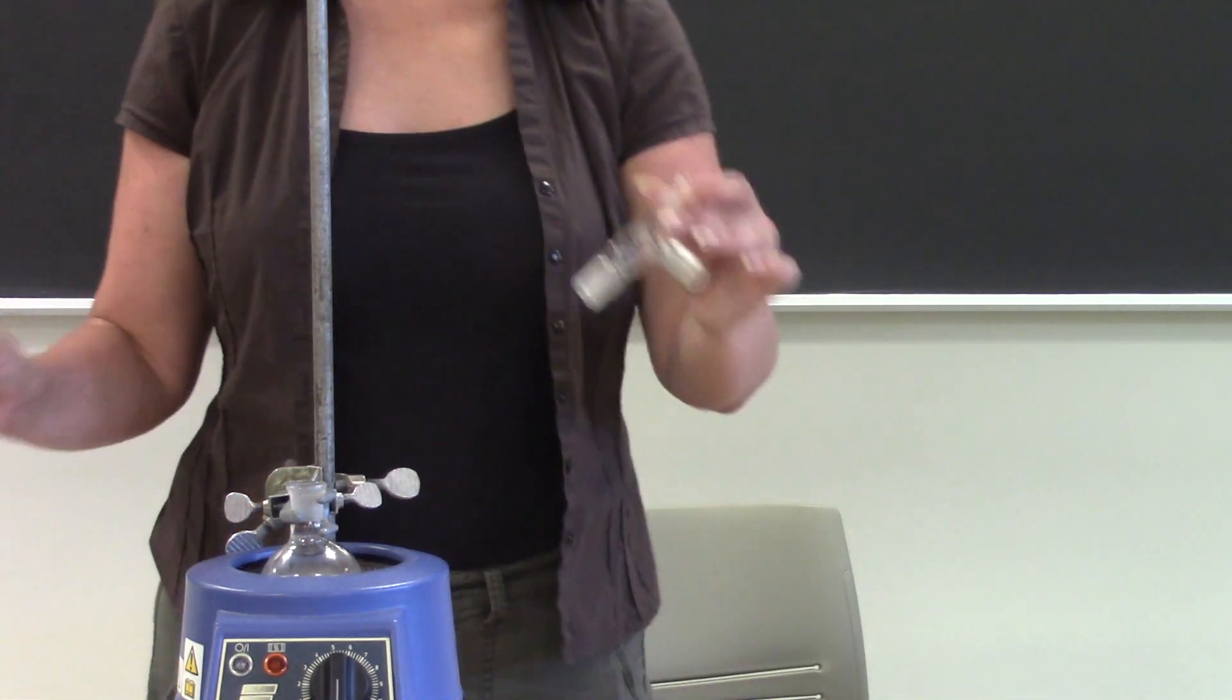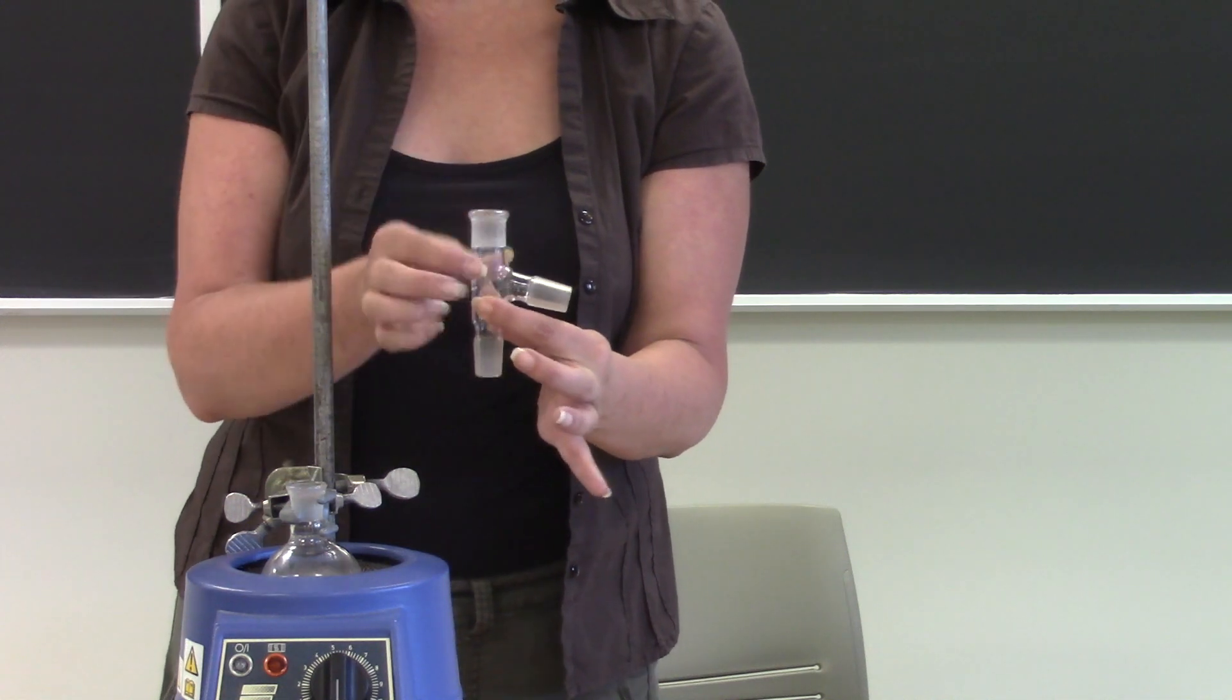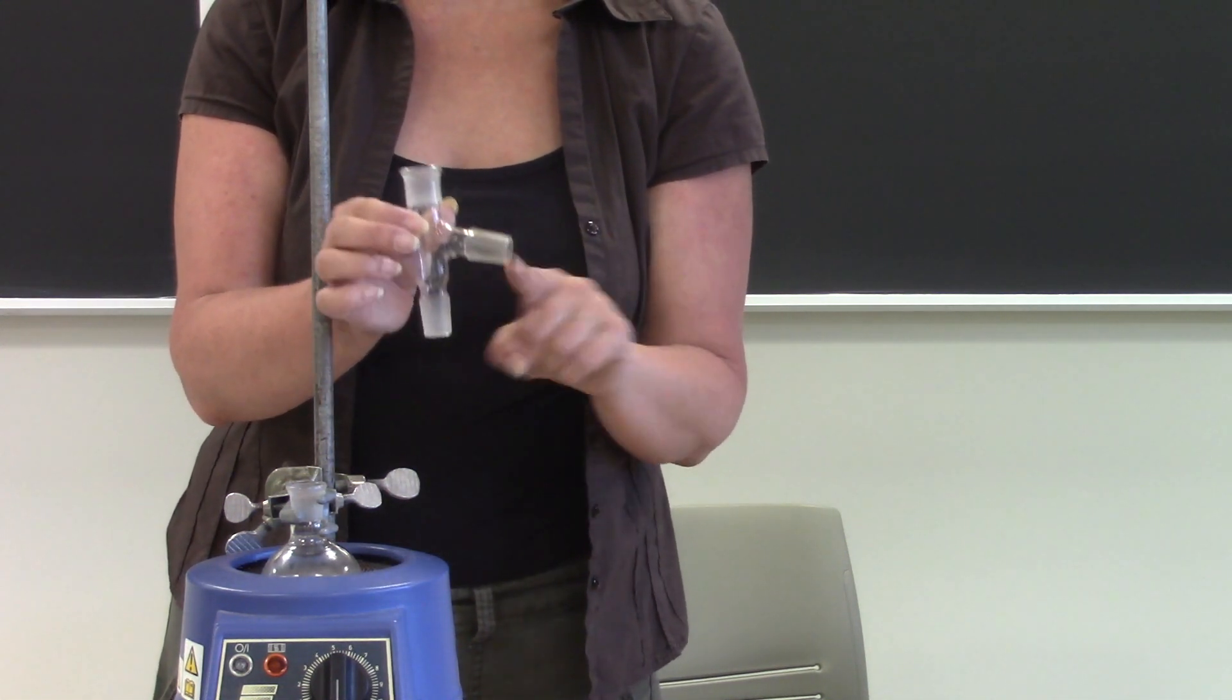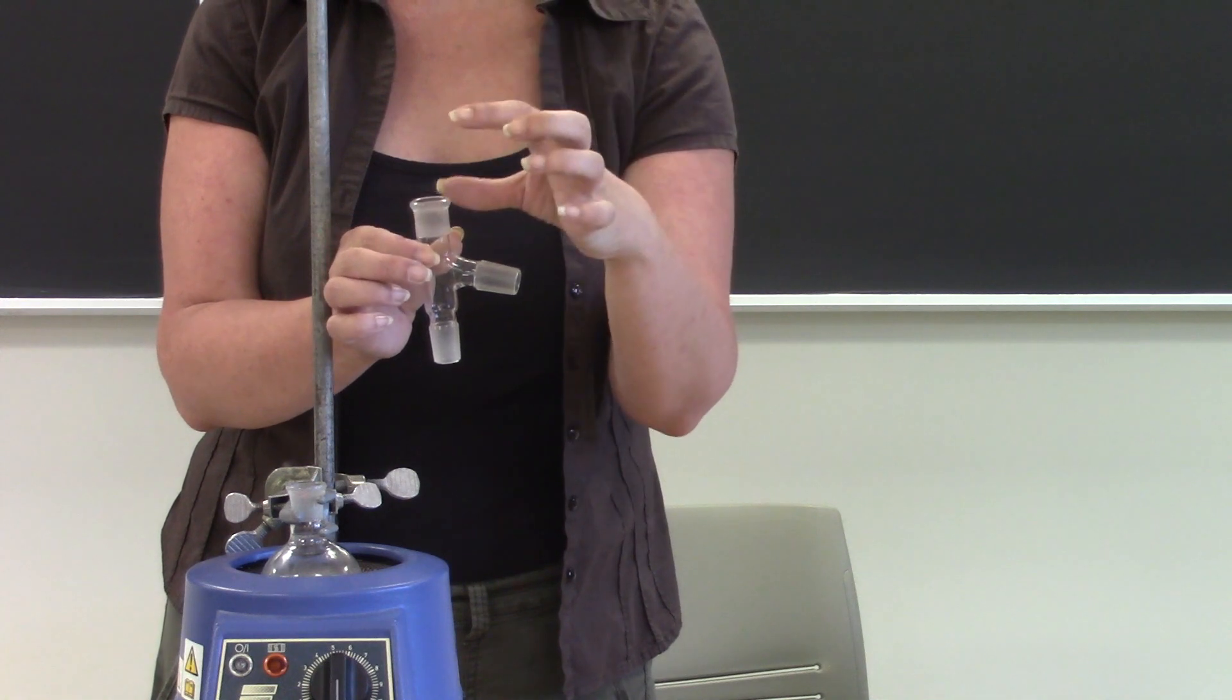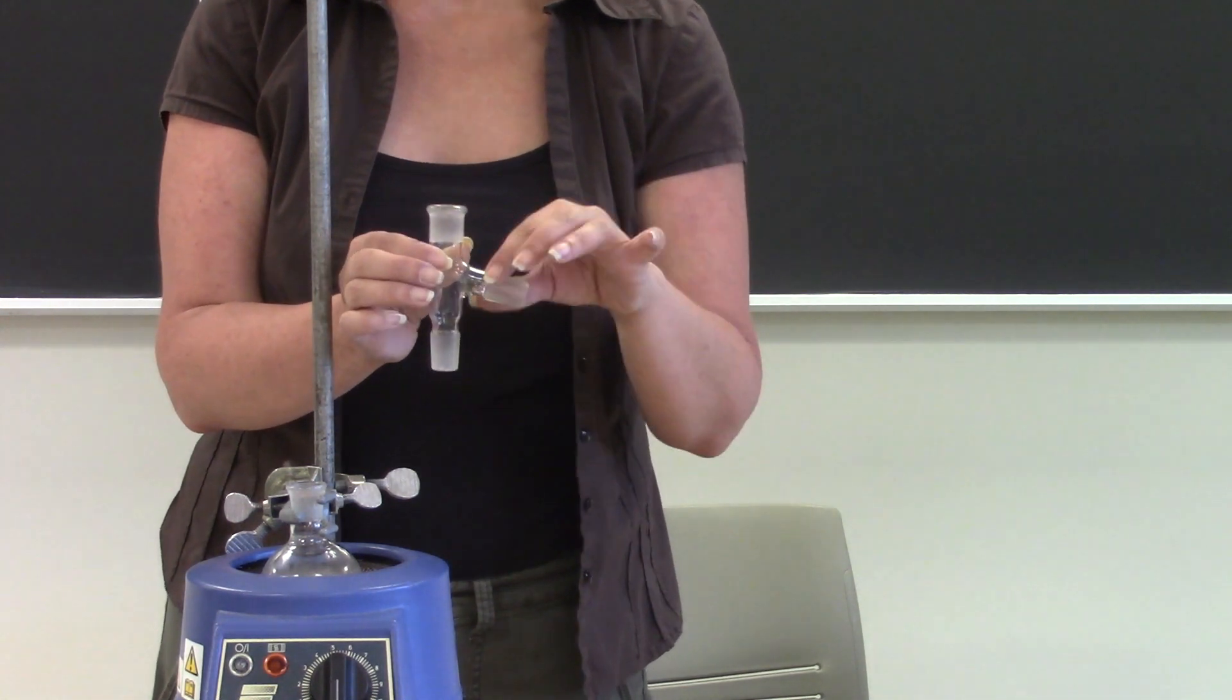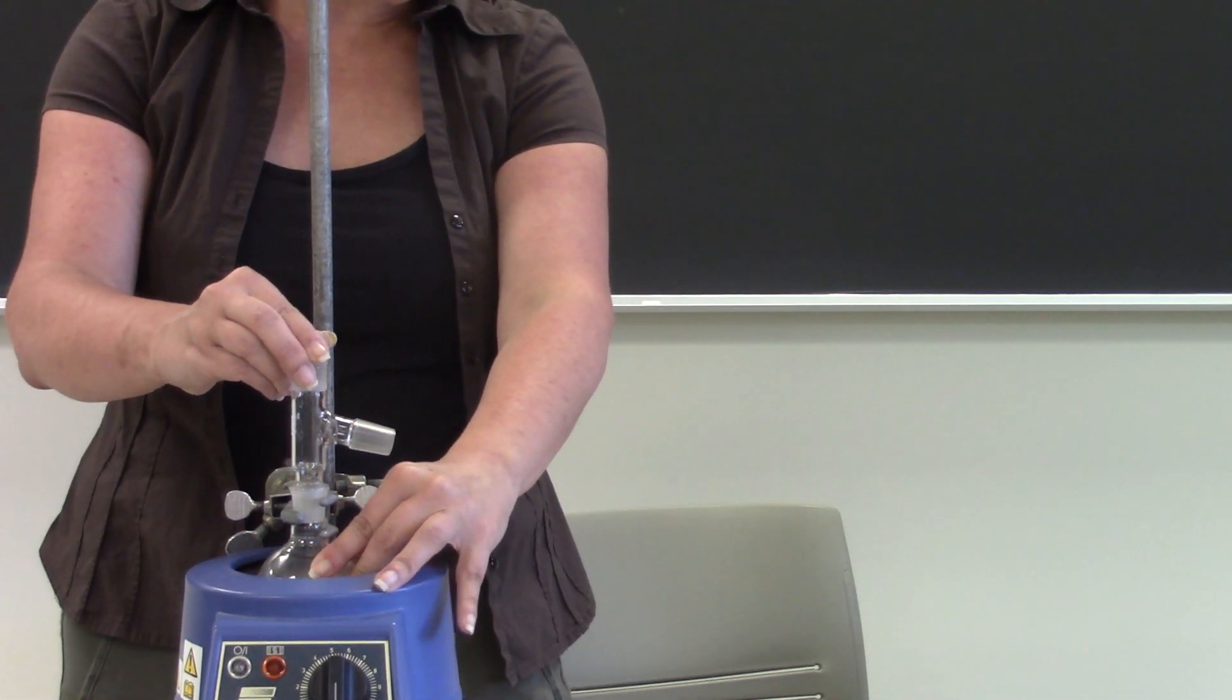Next comes this, it has a lot of different names. Some people call it a distillation adapter, some people call it a three-way adapter or three-piece adapter. That's because it has three different necks. The first neck goes down into the round bottom flask, the one that's pointing up is going to be where you put your thermometer, and the one that's coming out to the side is where you put the condenser. So this is pretty simple, it just drops right in and again I'm going to make sure that that's going nice and straight.